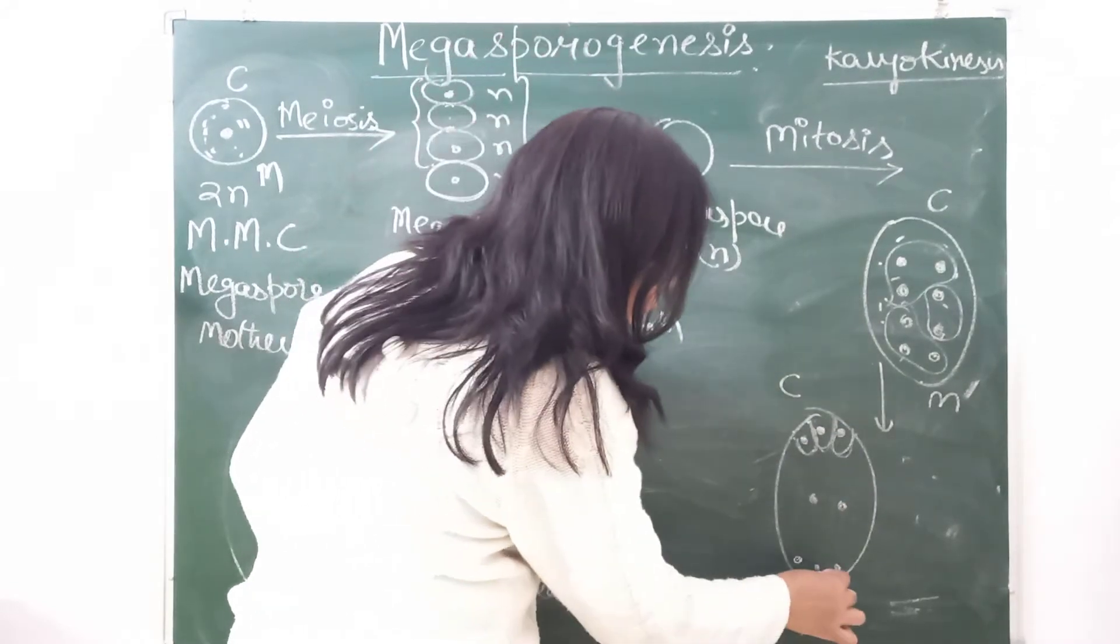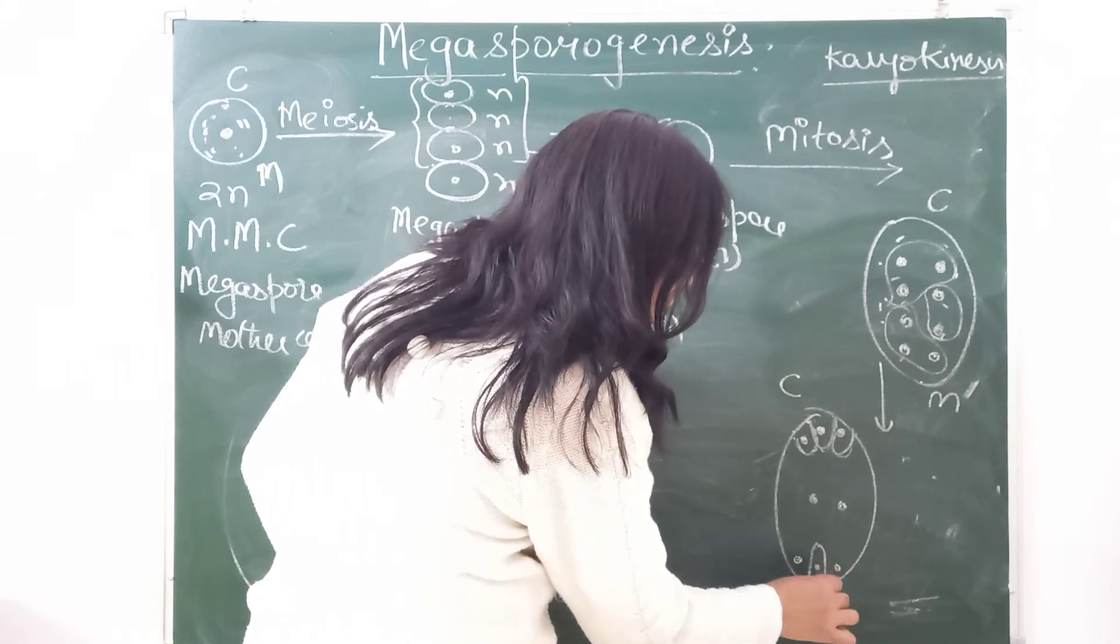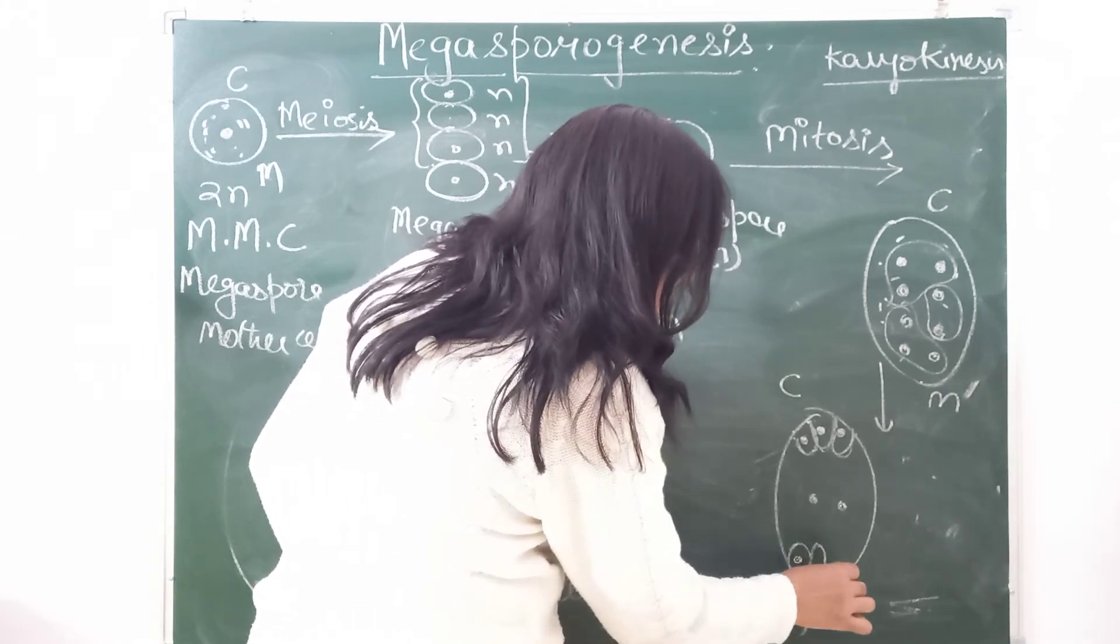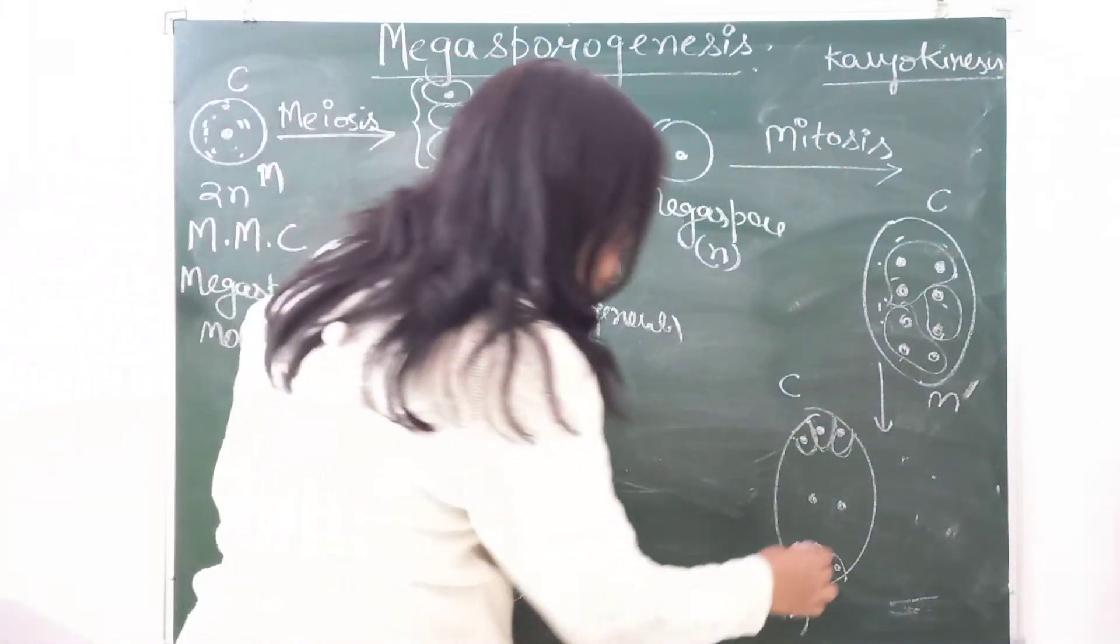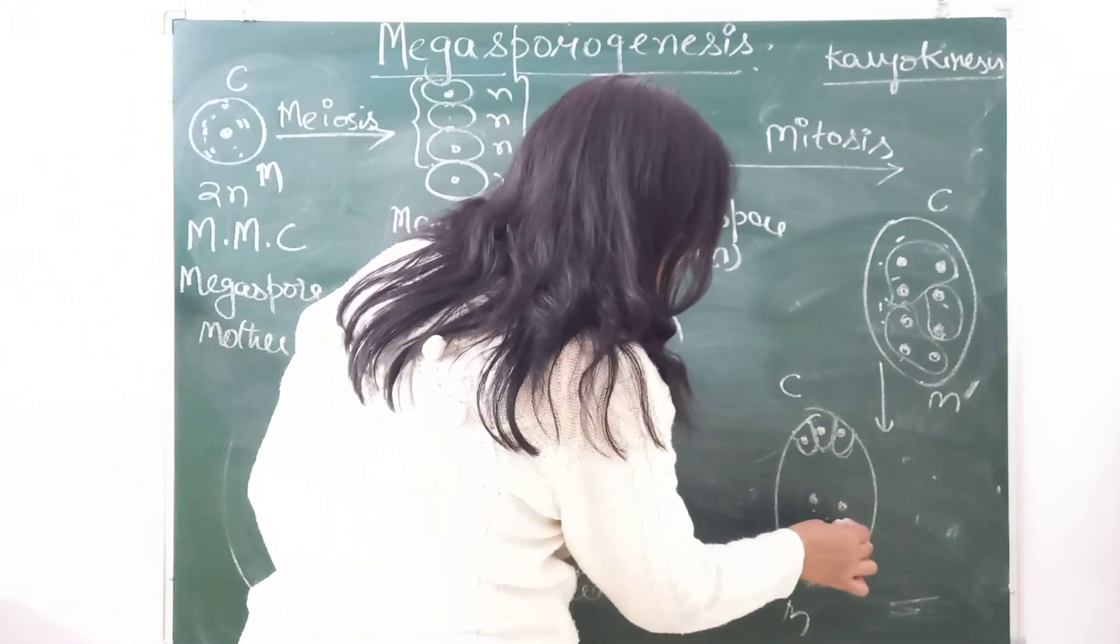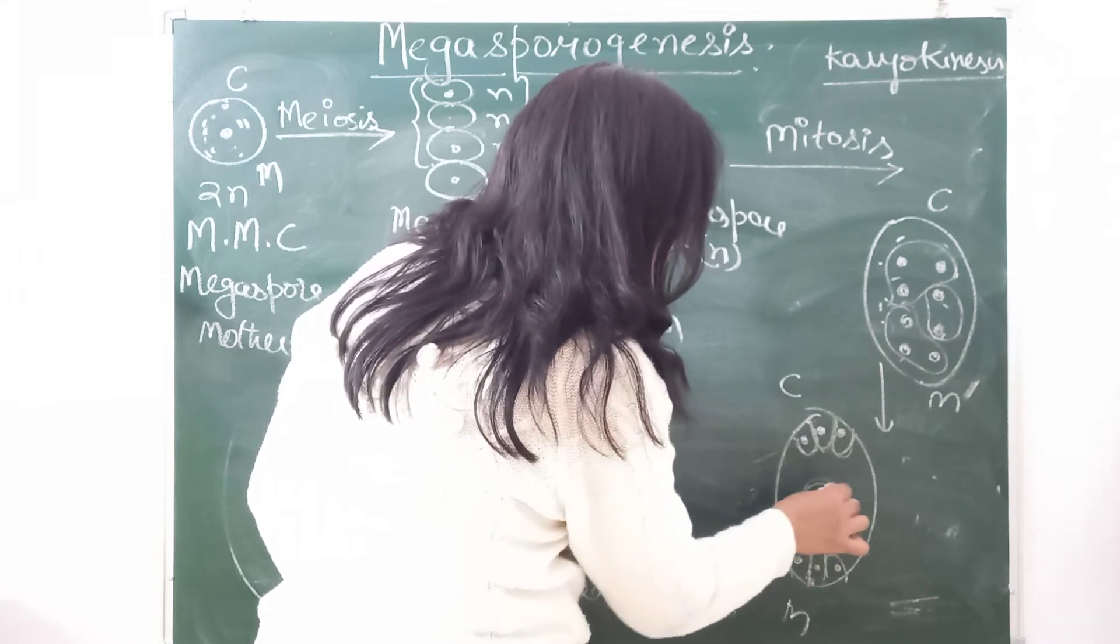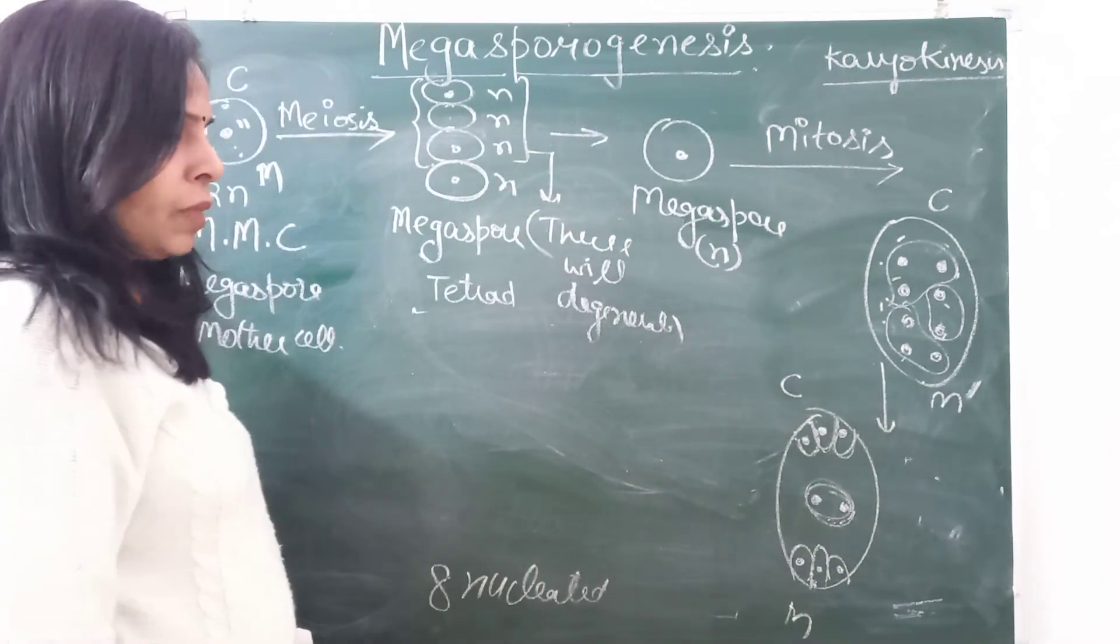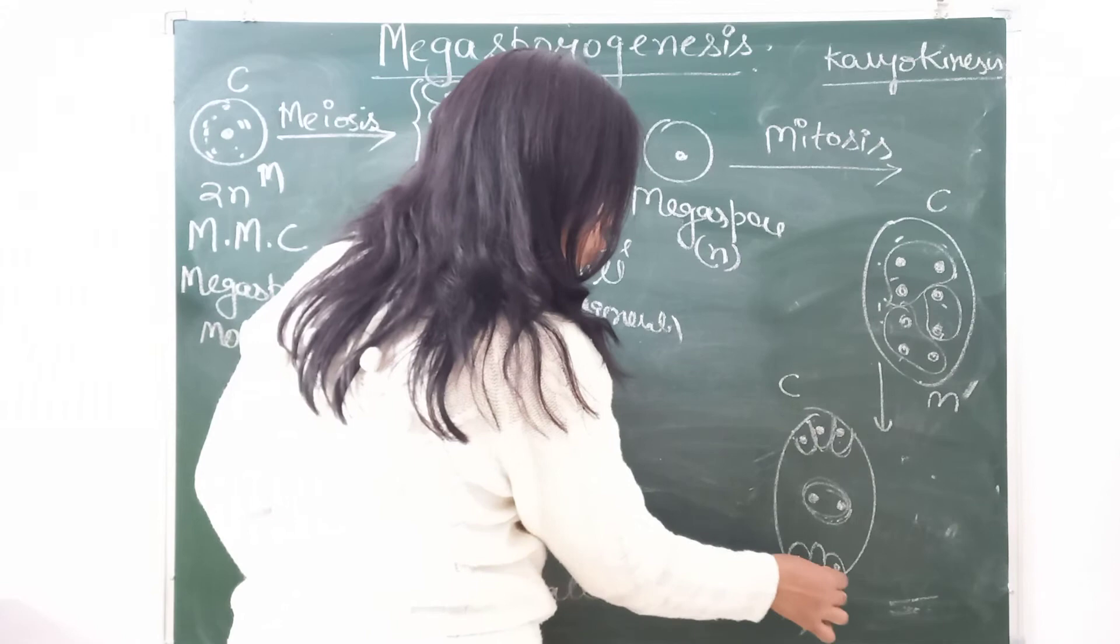Towards chalazal end, three cells form. Because of cytoplasm division and cell wall development, here three cells are formed towards micropylar end. Two nuclei in the center also develop their wall, and a cell is formed. This cell has how many nuclei? Two nuclei.